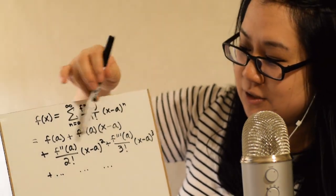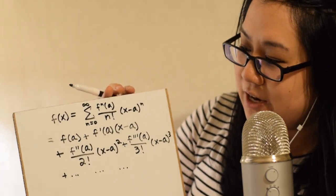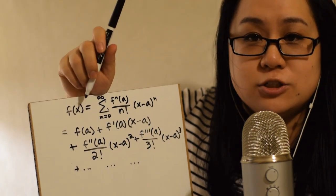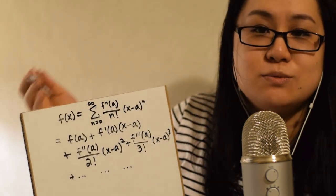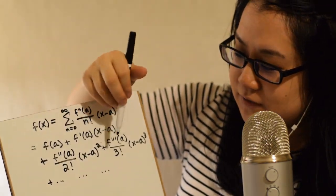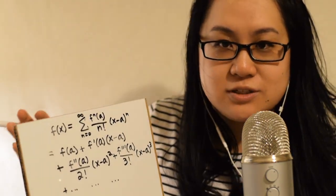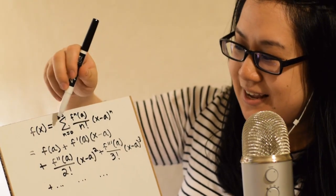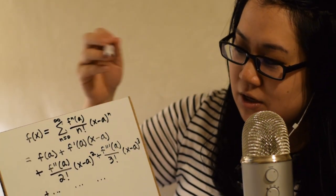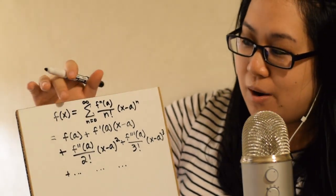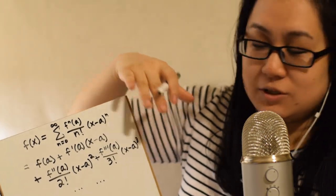The significance is that if we have some complicated function, as long as we can apply derivative rules and find these derivatives at our point a — assuming no differentiability issues — we can study or estimate properties of f of x using this polynomial expansion. If a happens to be zero, it's called the Maclaurin series — that's literally just a special case.